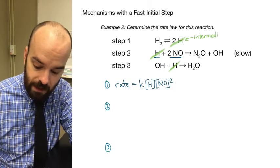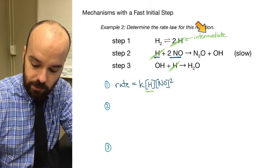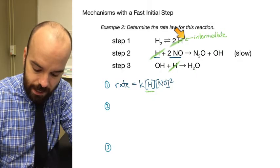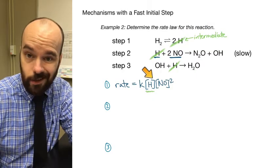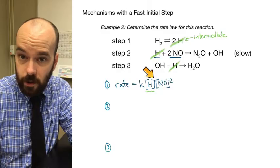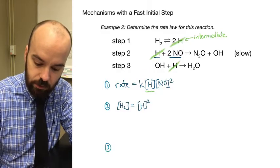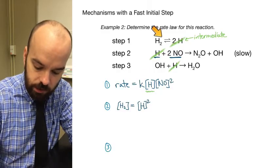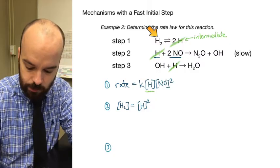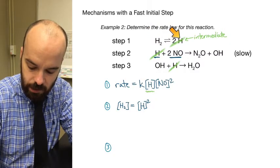Then we take the fast initial step and rewrite it as a mathematical equation, because H in our initial rate law is an intermediate. From step one we get [H₂] equals [H]², using the coefficient of two as the exponent.